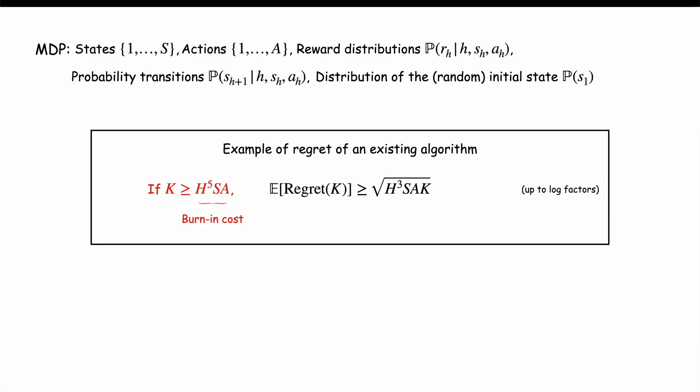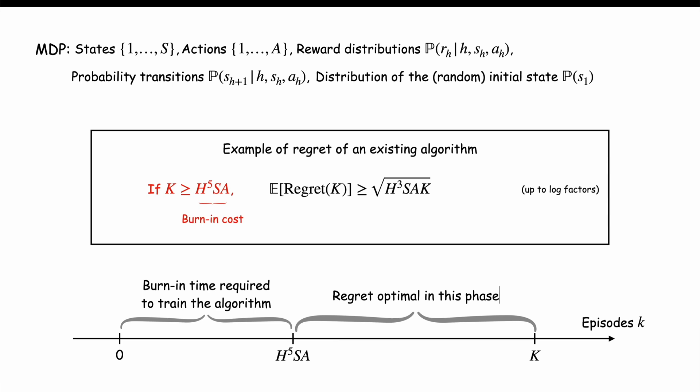However, while there are algorithms which achieve the optimal regret, they all have burning costs much larger than HsA. Now, what does that change and why is that a problem? Say you want to run your algorithm and achieve the optimal regret. If your algorithm has a burning cost of H to the 5sA, it means that you need to train it during at least HsA episodes in order to achieve the optimal regret. Put it that way, the regret of your algorithm is the score it achieves and the burning cost is the time it takes to train it. So, existing algorithms achieve the optimal score but take a long training time.